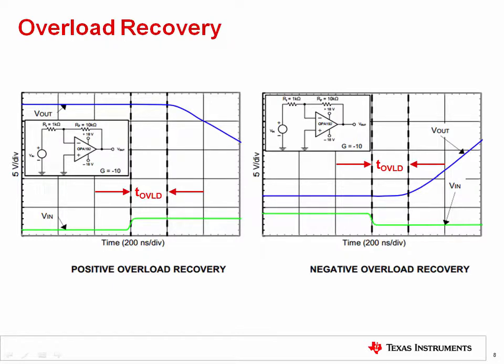Up to this point, we have considered the small signal and large signal response of signals that are inside the linear range of the amplifier — without violating the input common mode range or output swing limitations. Now we'll discuss what happens when we drive signals beyond the op-amp's output swing limitations. Driving the output beyond its linear range is called overloading the output. Once the overload condition is corrected, there is a time delay called t-overload before the output can recover and return to normal linear behavior.